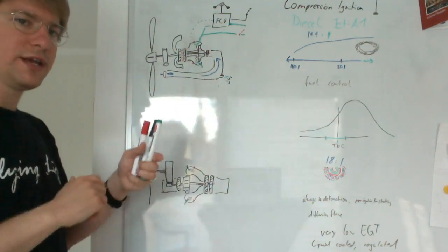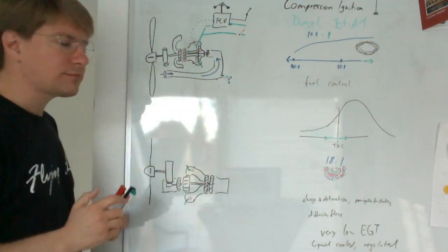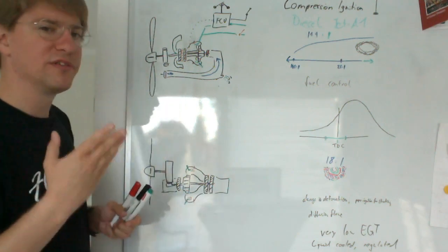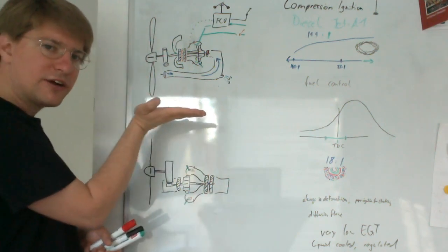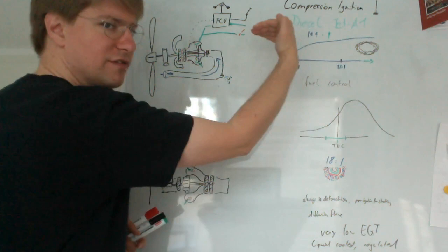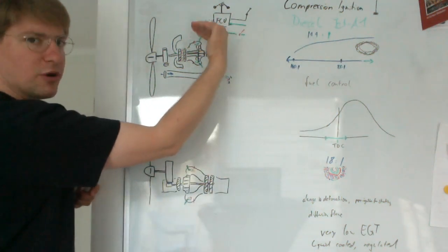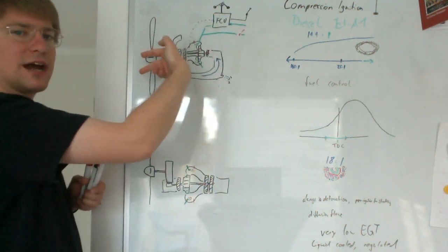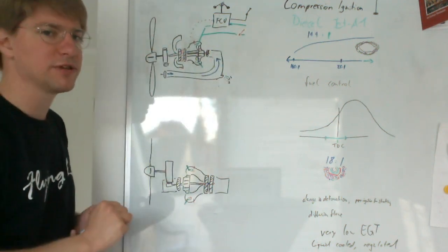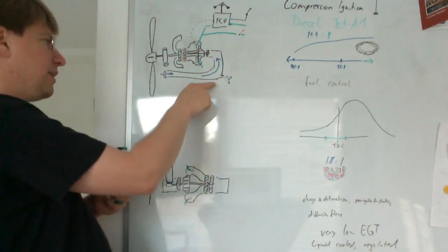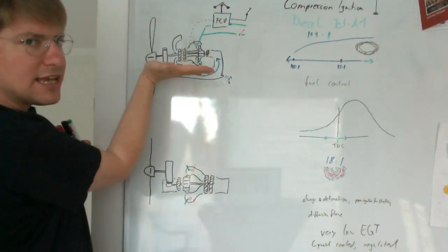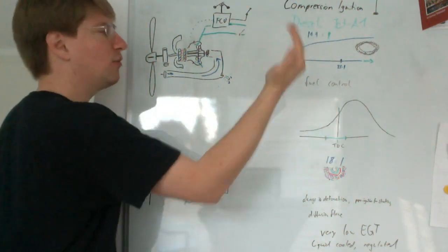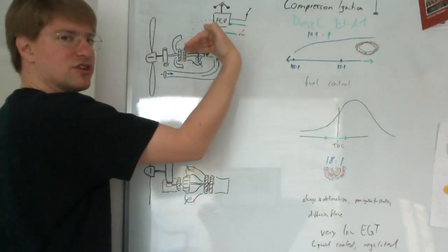The PT6 engine is a reverse flow type engine. Reverse flow because the air goes to the back of the engine first, and then as it enters the engine and goes through the combustion process, it flows in the opposite direction to where the airplane is going. That's where the reverse flow comes from.